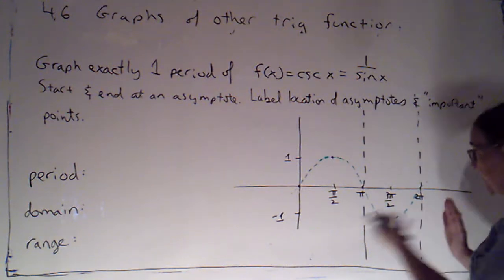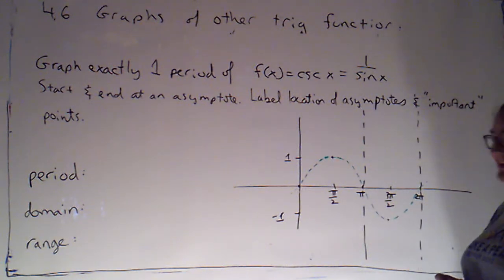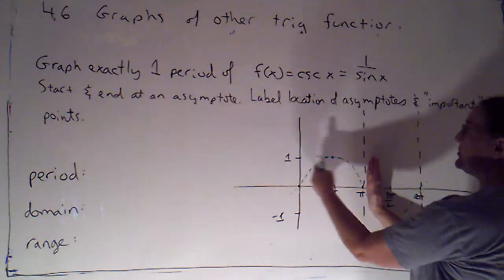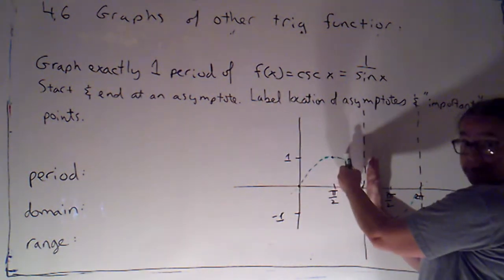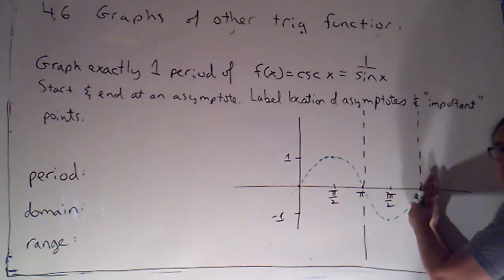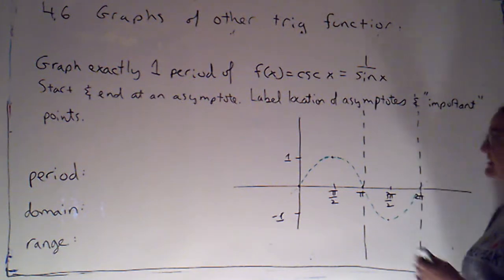And just like with cosine and secant, the asymptotes divide things into intervals where sine is positive and therefore its reciprocal will also be positive and where sine is negative so that its reciprocal cosecant will also be negative.